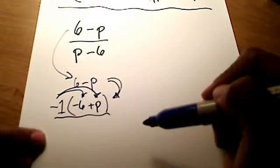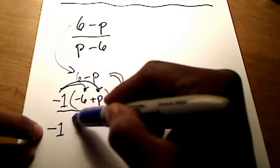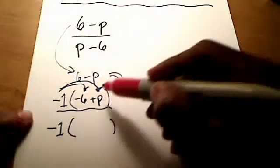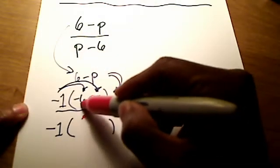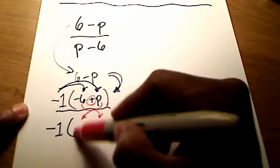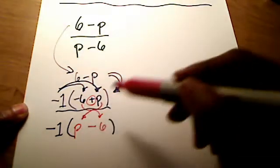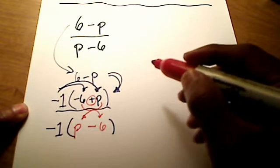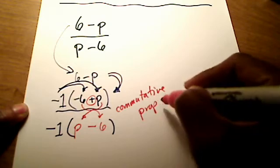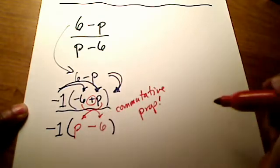So I rewrote 6 minus p like that. Now, that still doesn't quite look like I want it to. So there's this other property that I'm going to invoke in math that says as long as you are adding numbers, you can move them, move these terms around. You can take that p and put it in the front, and you can take that negative 6 and put it in the back. You can swap them around. Do you remember what that property is called? It's called the commutative property. Whenever you move things around, if you're adding, the commutative property says you can move them around.